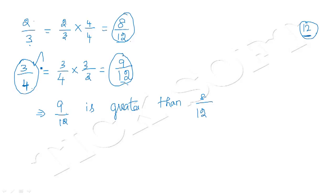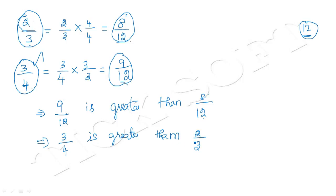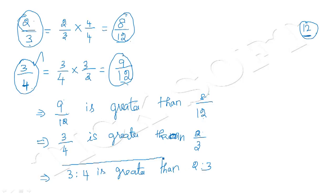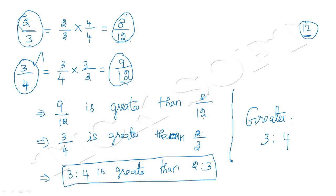So instead of 9 by 12, we substitute 3 by 4. And since 2 by 3 and 8 by 12 are equivalent fractions, instead of 8 by 12 we substitute 2 by 3. This means 3 by 4 is greater than 2 by 3. In ratio form, 3 is to 4 is greater than 2 is to 3. So the greater ratio is 3 is to 4. Whenever we want to compare two ratios, we convert the given ratios into fractions with the same denominators.